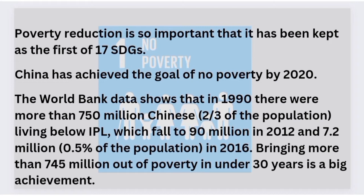The importance of poverty alleviation is clear from the fact that among the United Nations' 17 Sustainable Development Goals, the very first goal is 'No Poverty.' If we talk about China's success in achieving this goal, we learn that by the end of 2020, China had completely achieved its No Poverty goal, as announced by Chinese President Xi Jinping.